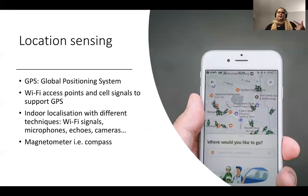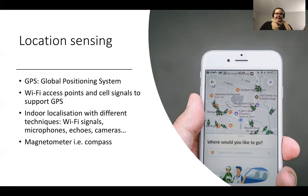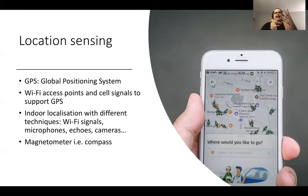Smartphones have a lot of different sensors available. I'm speaking about smartphones here because they are quite easy to understand for everyday life since most of us use them, but similar sensing technologies are also used in different embedded devices — from the size of autonomous vehicles down to the smallest robotics.